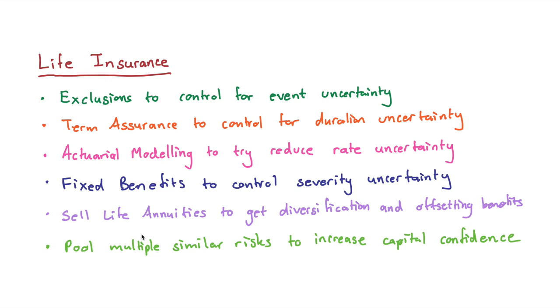And then the final thing that actuaries and statisticians love to do is we found that by pooling multiple similar risks together, we can increase the capital confidence. And the reason why this happens is because we reduce variance. And the classic example is if I flip a coin, I don't know if it's going to be heads and I don't know if it's going to be tails. But if I flip a hundred coins, I know that most likely there's going to be between 45 and 55 heads. I can kind of create a little bit more certainty on the amount when the number of risks start to increase. So this is how actuaries traditionally handle, say, a risk like mortality.